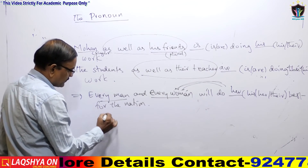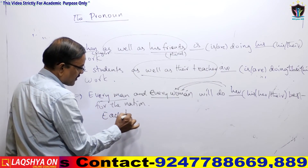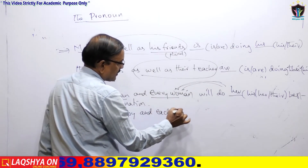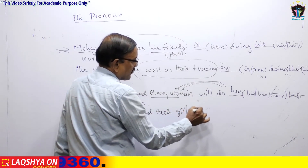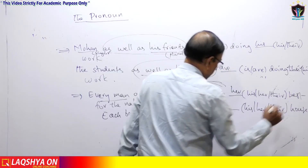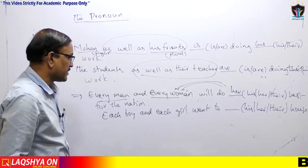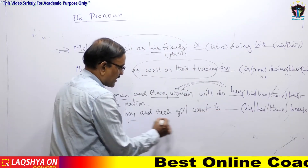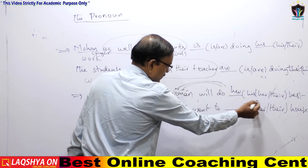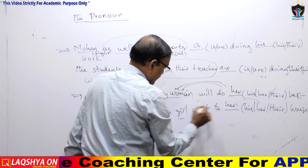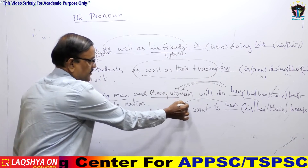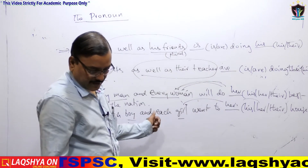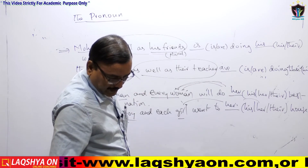'Each boy and each girl went to her class.' Which noun is nearest? 'Girl' is nearest to the pronoun, so 'her' is the correct pronoun. When two singular nouns are joined and a pronoun must agree, take the nearest one. We often make mistakes in this case.